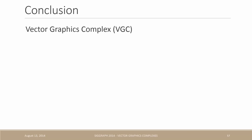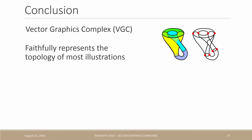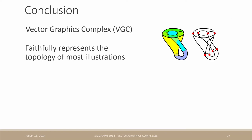To conclude, we introduced the vector graphics complex, which faithfully represents the topology of most vector graphics illustrations. If you want to try it, simply go to vpaint.org to download our implementation vpaint. This completes the presentation. I recall that the PowerPoint slides presented in this video can be downloaded at the Research Project web page, indicated in the description of this video, where you can also find the SIGGRAPH paper and the technical report. Thank you for watching!